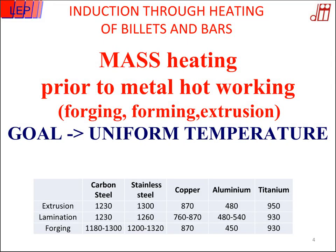Today, we will talk about the mass heating of metals — a thermal process that is required before hot working, mechanical working, like forging, forming, and extrusion. The main goal of this technology is to obtain a uniform temperature across the radius of the billet. Sometimes along the axis we are required to have a specific temperature distribution, but for today we can assume uniform temperature all along the mass of the billet.